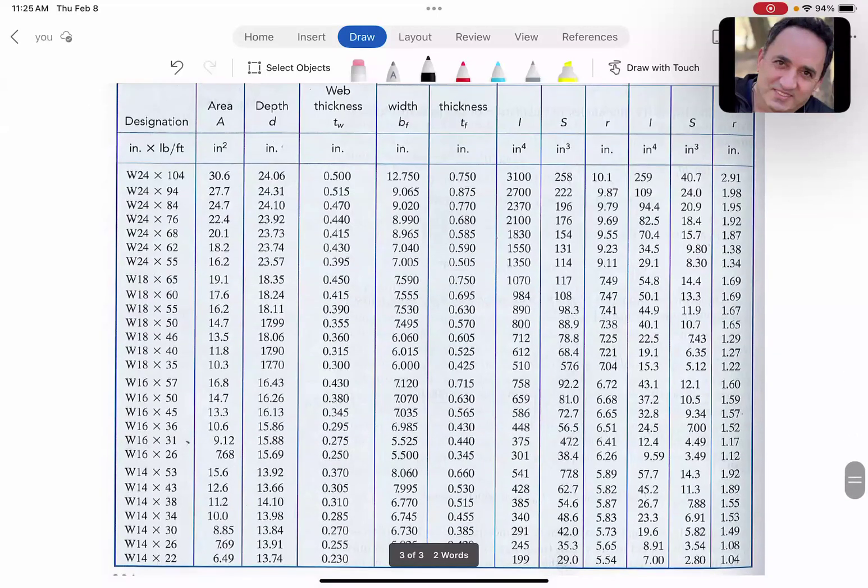I have the table here. Section modulus is right here. Look for one that's a little bit larger than 60. I see W18×40 with S = 68.4 inch³ and W14×43 with S = 62.7 inch³. Both work, but look: the second number is the approximate weight. W18×40 has 40 pounds per foot versus W14×43 with 43 pounds per foot.